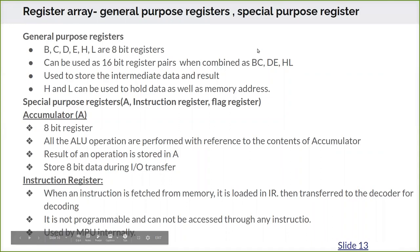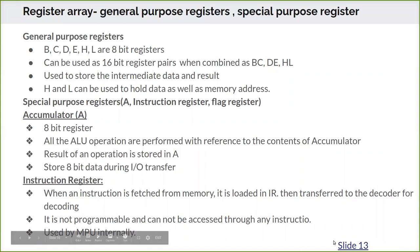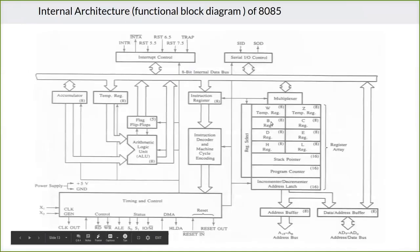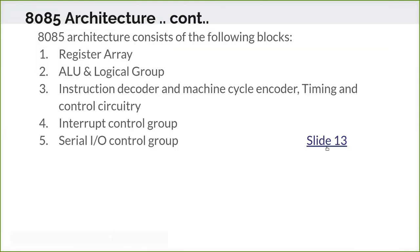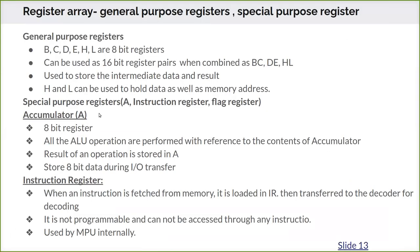B, C, D, E, H, L are 8-bit registers. They can be combined together — BC, DE, HL — and when combined they act as a 16-bit register. They are used to store intermediate data. To write some coding, the user can access the data inside these registers, for which the instruction set provides the proper instructions in order to manipulate the data in these registers.